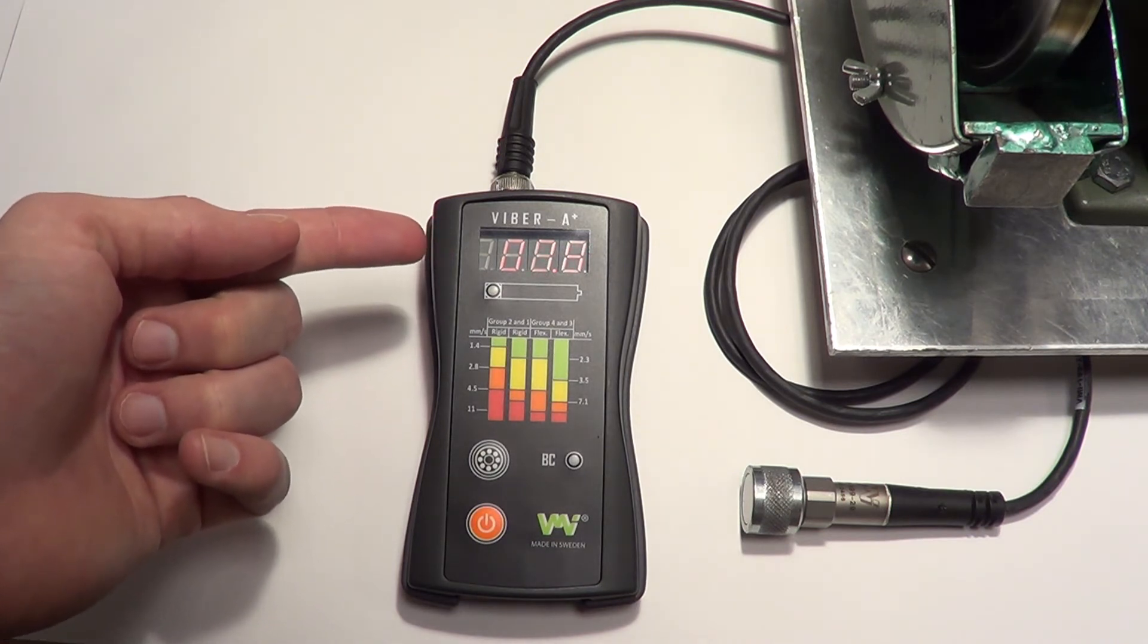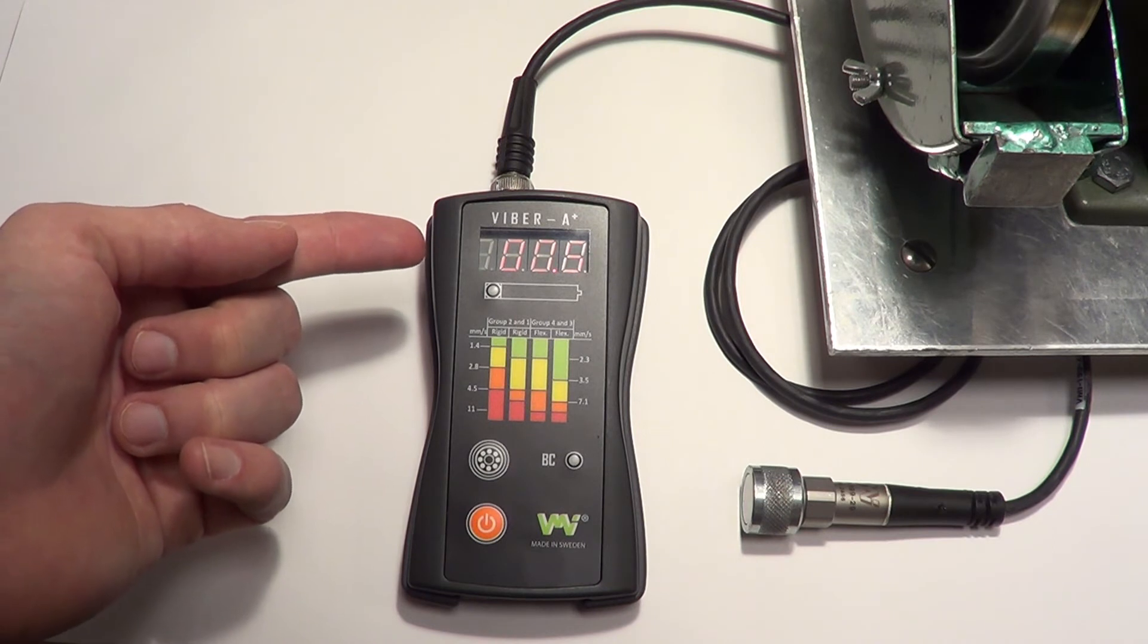The Viper A+ is our simplest analog vibration measuring instrument, making it a very cost-effective option when choosing a measuring device.